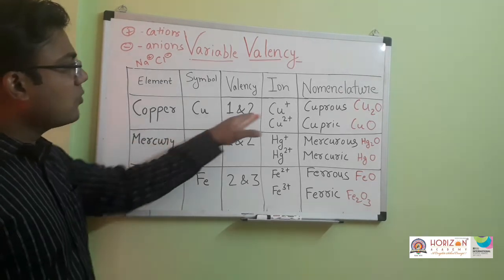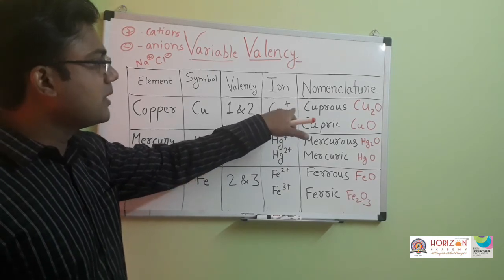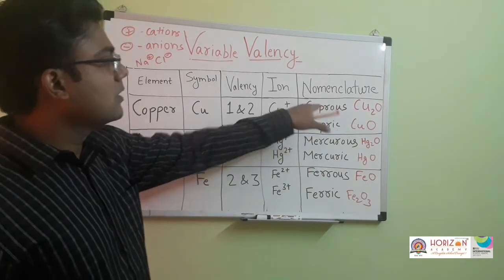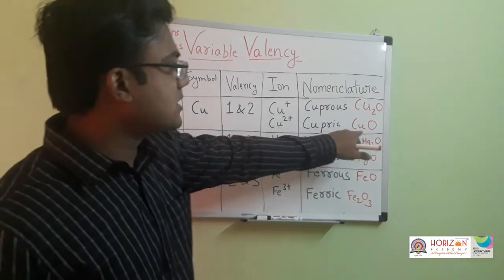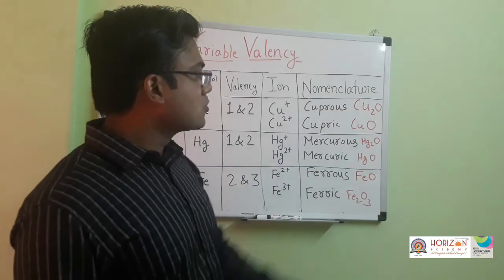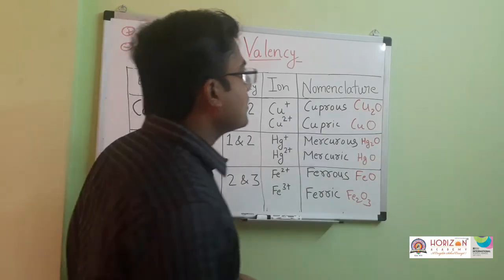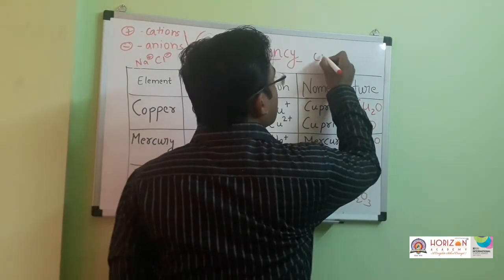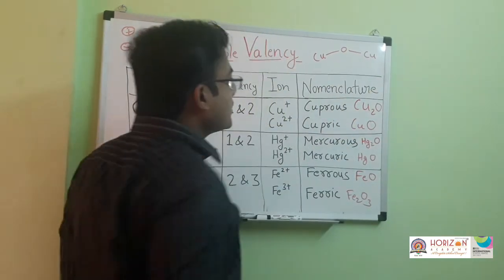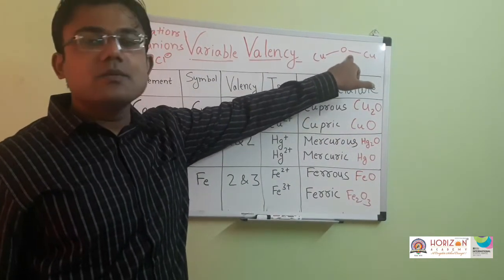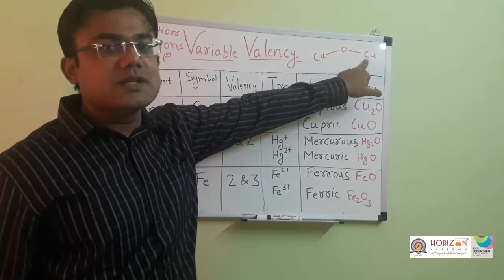Copper can have either one or two valency. In some conditions it can lose one electron to form Cu plus, which is known as cuprous, and in some conditions it can lose two electrons to form cupric. The best example is cuprous oxide, Cu2O. Copper can form one bond, so two copper atoms are each forming one bond with oxygen — plus one charge on each copper.